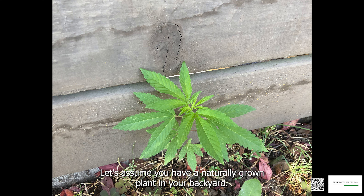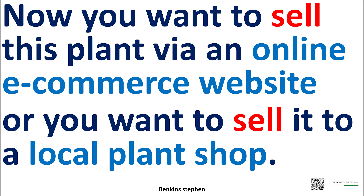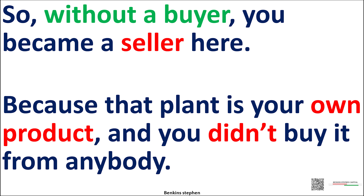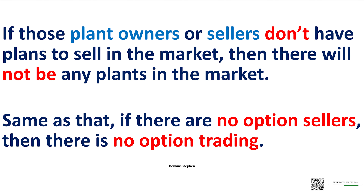Let's assume you have a naturally grown plant in your backyard. Now you want to sell this plant via an online e-commerce website or to a local plant shop. Automatically, you became a seller directly — you didn't buy that plant from anybody. So without a buyer, you became a seller here, because that plant is your own product and you didn't buy it from anybody. If those plant owners or sellers don't plan to sell in the market, then there will not be any plants in the market. Same as that, if there are no option sellers, then there is no option trading.